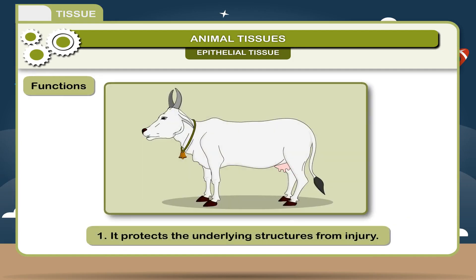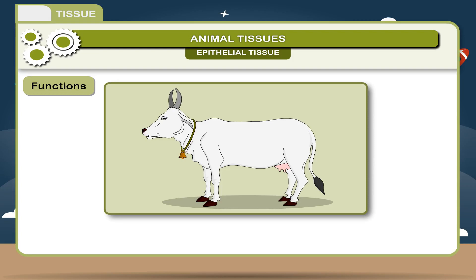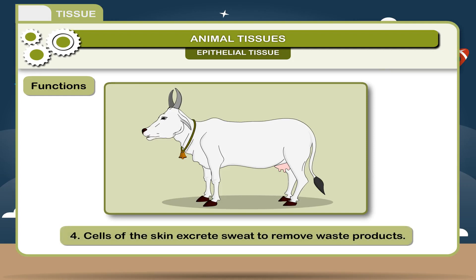Functions: 1. It protects the underlying structures from injury. 2. The cells present in the stomach secrete juices, which help in digestion. 3. Some cells help in absorption of digested food. 4. Cells of the skin excrete sweat to remove waste products.